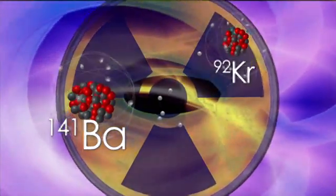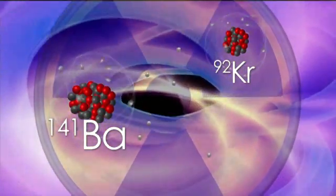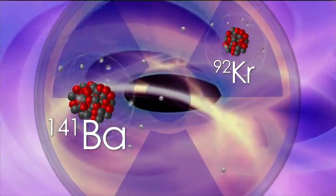The destabilized nucleus splits, transforming into lighter elements like krypton and barium. Energy and radioactivity are released, as well as multiple fast-moving neutrons.